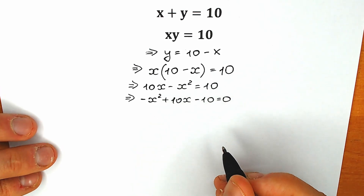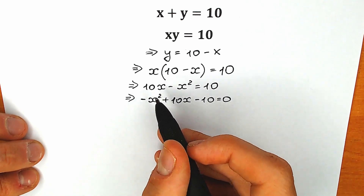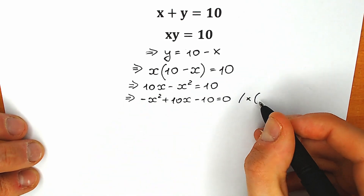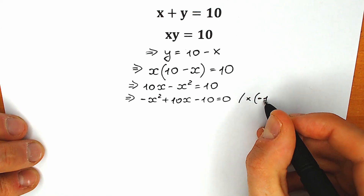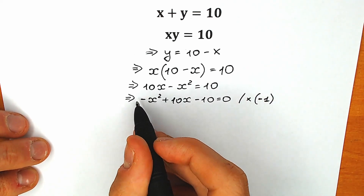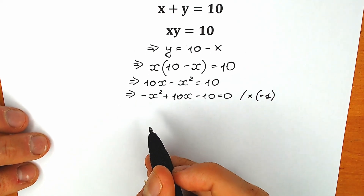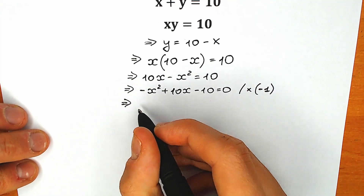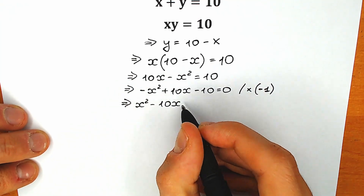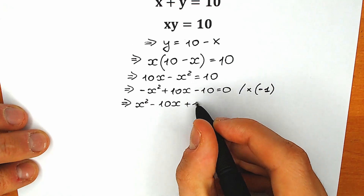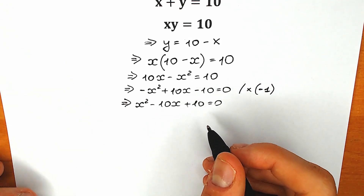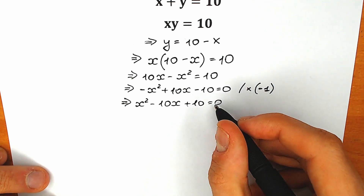We know the final tricky move — because we prefer a positive leading coefficient, we need to multiply by minus 1. It changes nothing, but it helps us change the main sign. As a result, we have x squared minus 10x plus 10 equal to 0. So here is our quadratic equation. Finally we've simplified it, and now let's solve this quadratic equation.